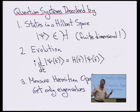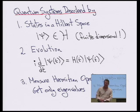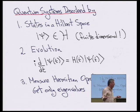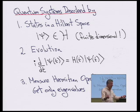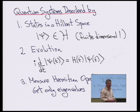Question: can the Hamiltonian be a function of time? It could be — it could be a time-dependent Hamiltonian. For example, if you have two nuclei bouncing back and forth and you want to describe an electron going around, that electron sees a time-dependent Hamiltonian. It's like in Newtonian mechanics where you could have a time-dependent force.